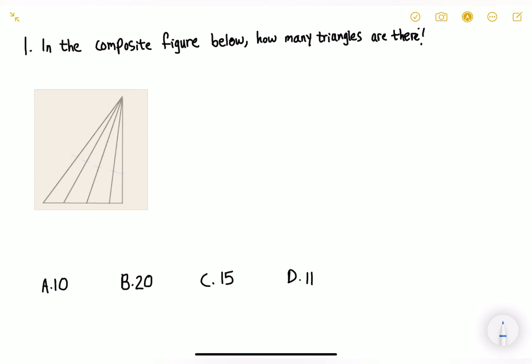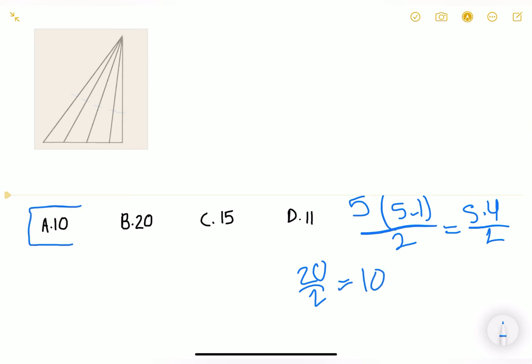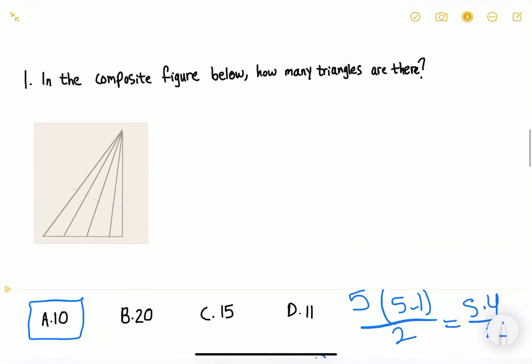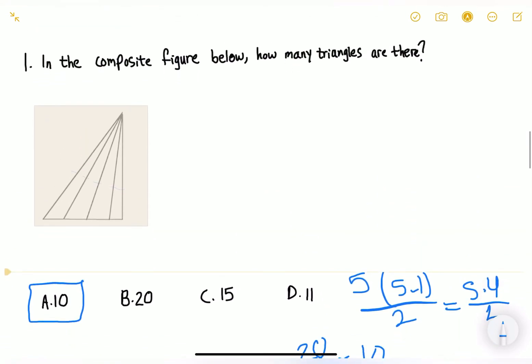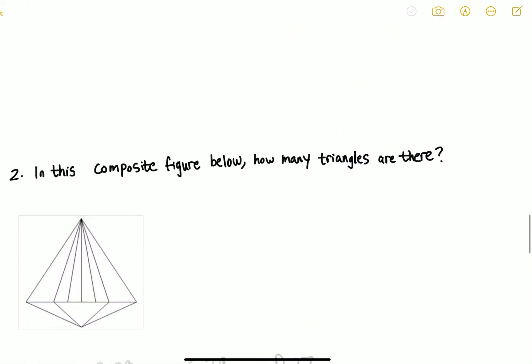We can use the formula with five as the number of people. So five times five minus one divided by two. That's five times four divided by two, which is 20 divided by 2, equals 10. Our answer is simply A. These are how many triangles are in the composite figure below.